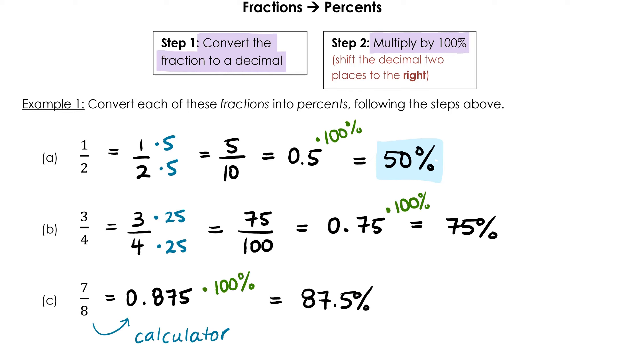Try the next two on your own and pause the video here while you do it. For part B, I converted 3 quarters into 0.75 manually, and then multiplied my answer by 100% to arrive at 75%. For part C, I did 7 eighths on my calculator because I know I can't turn 8 into 10 or 100 easily, and then I multiplied my answer by 100% arriving at 87.5%.